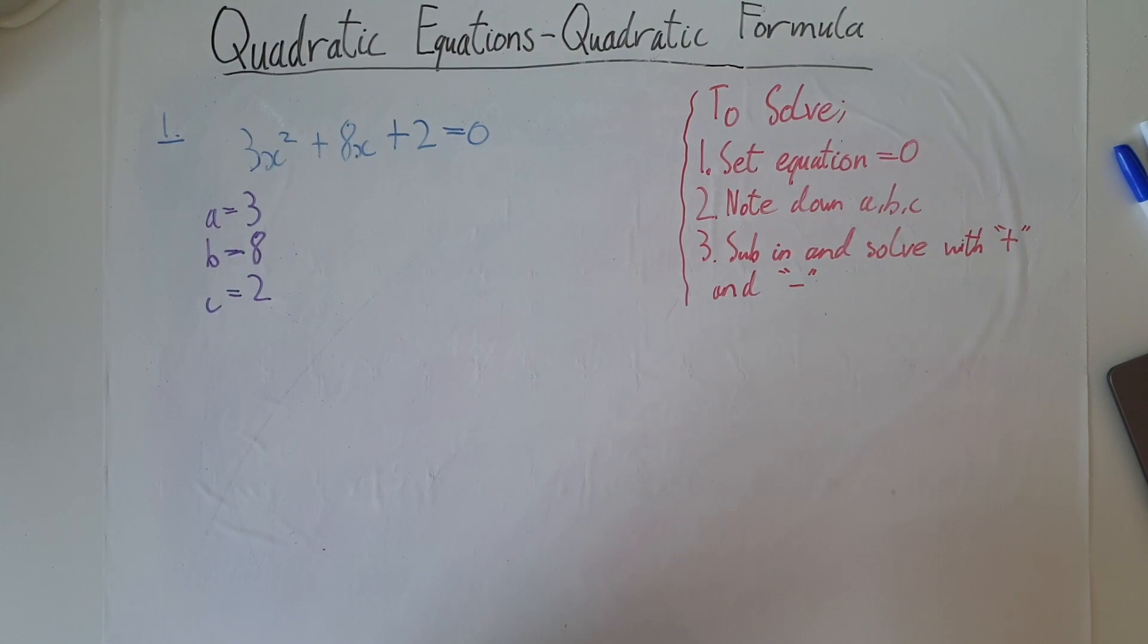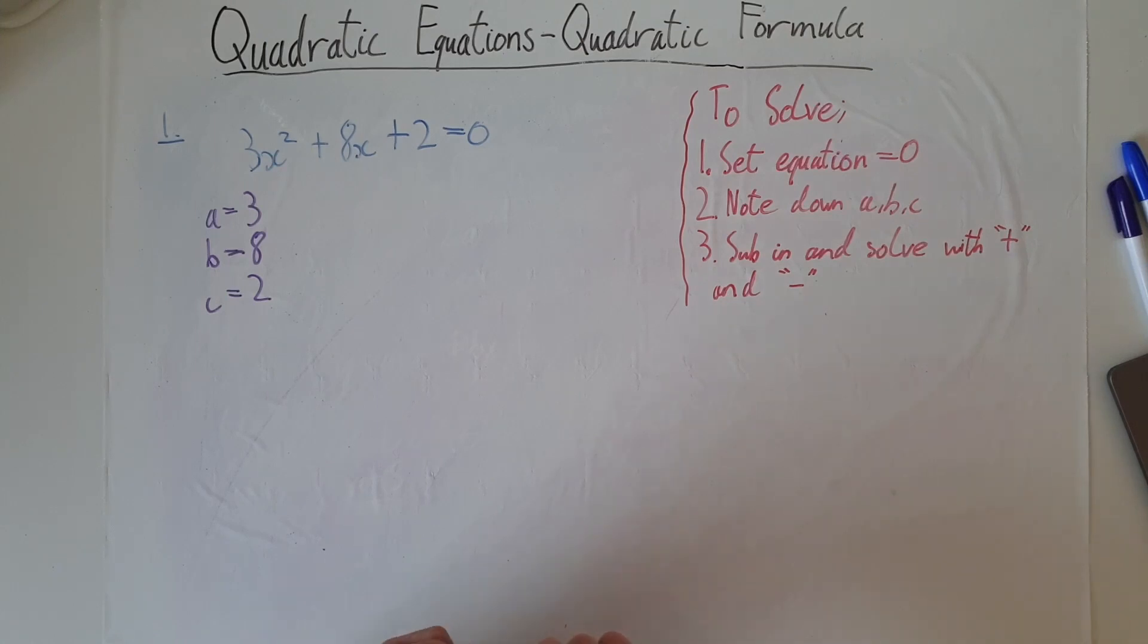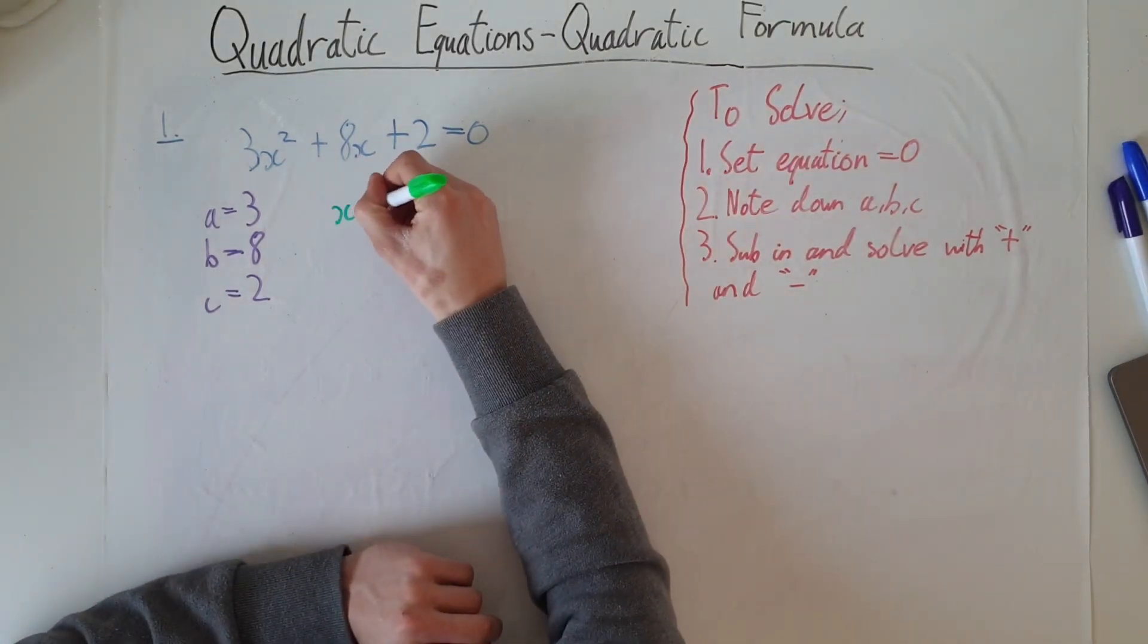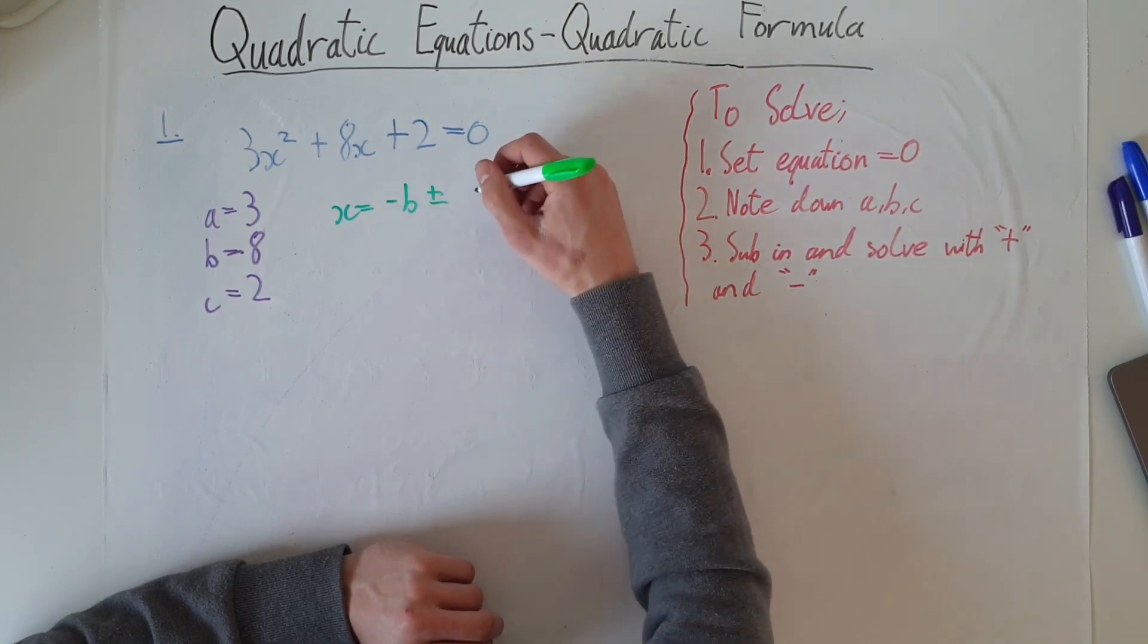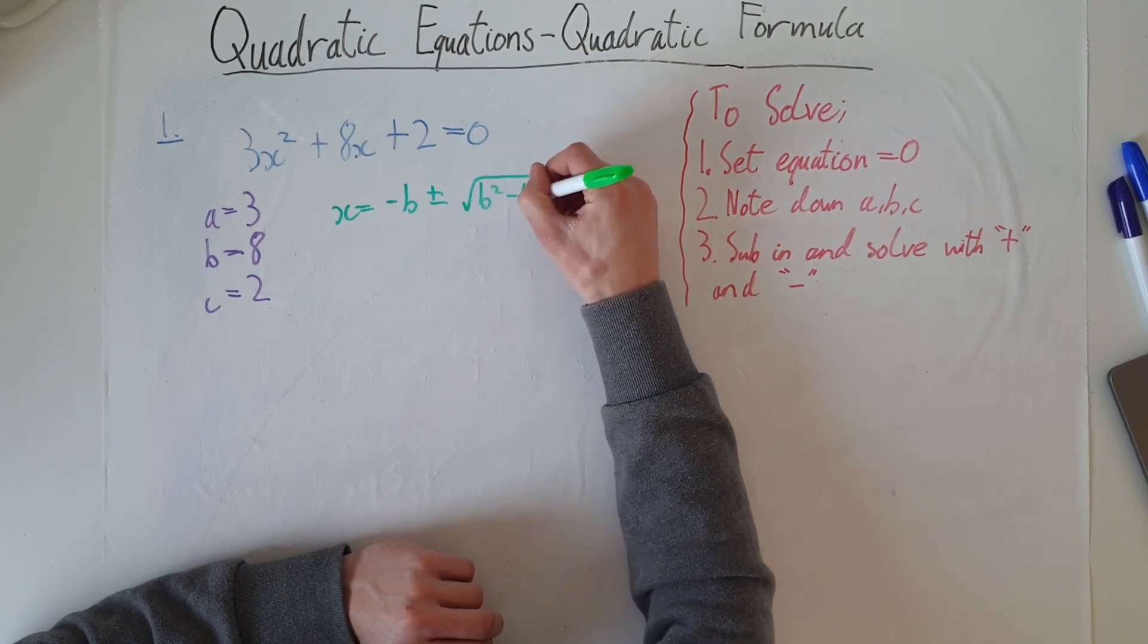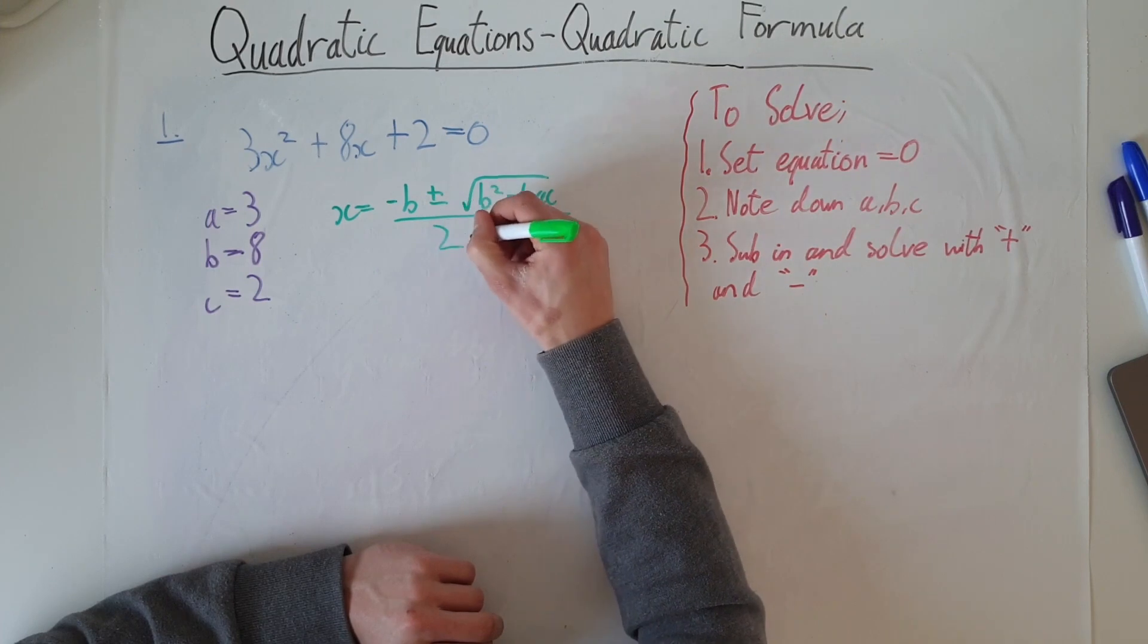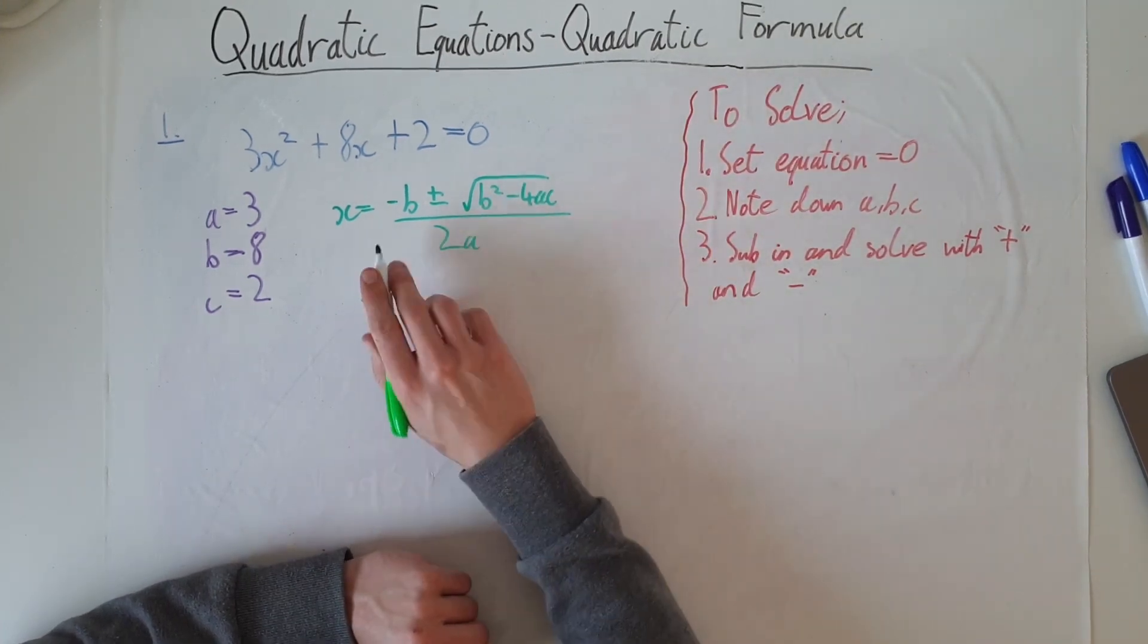Now we've done this, we can write down our quadratic formula and begin to solve. So writing down our formula first, we know our quadratic formula is: x equals negative b plus or minus the square root of b² minus 4ac, all over 2a. So now substitute in.